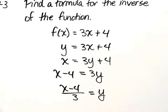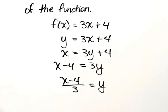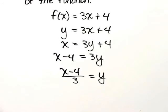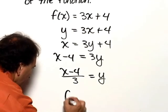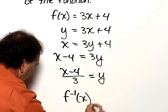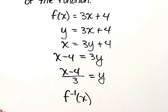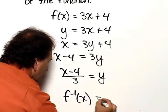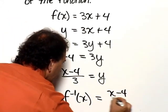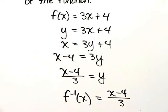The final step is to replace the letter y with the inverse function notation, and in addition, I'm going to reverse the order here, so we'll say the inverse of f of x, or f inverse of x, is equal to x minus 4 divided by 3.